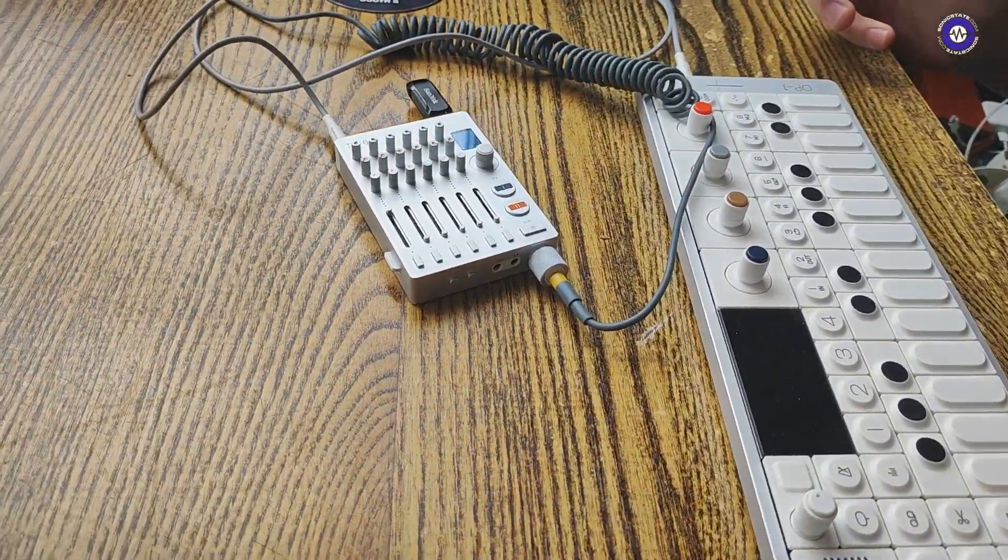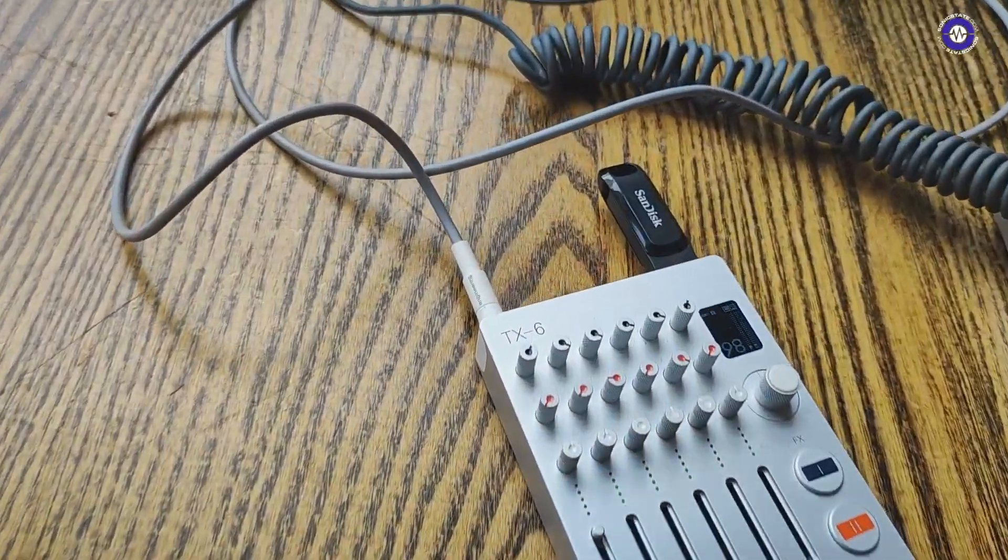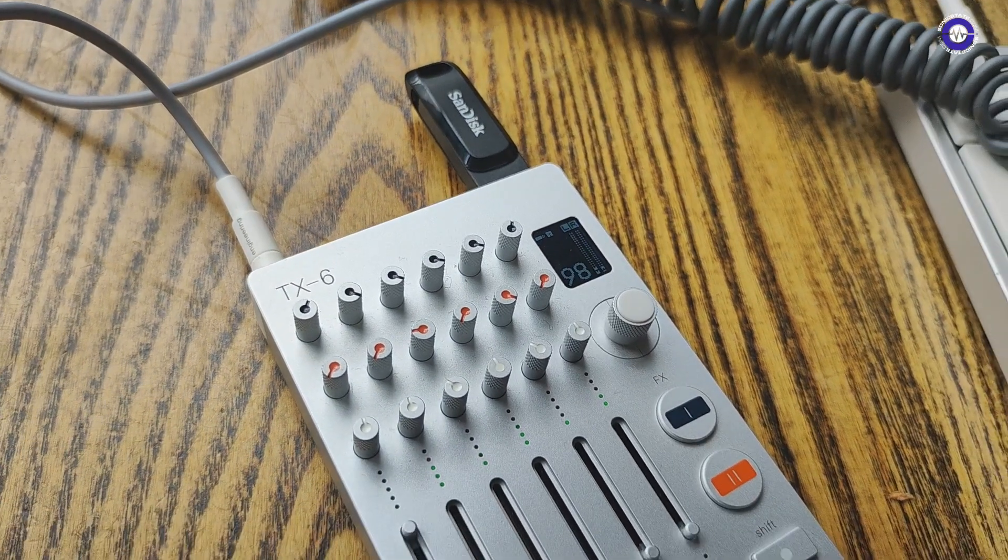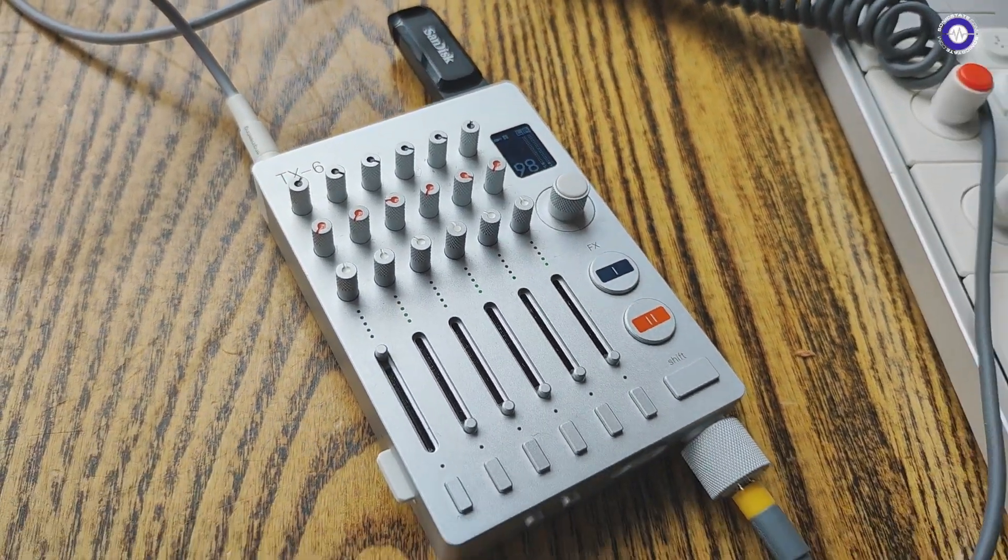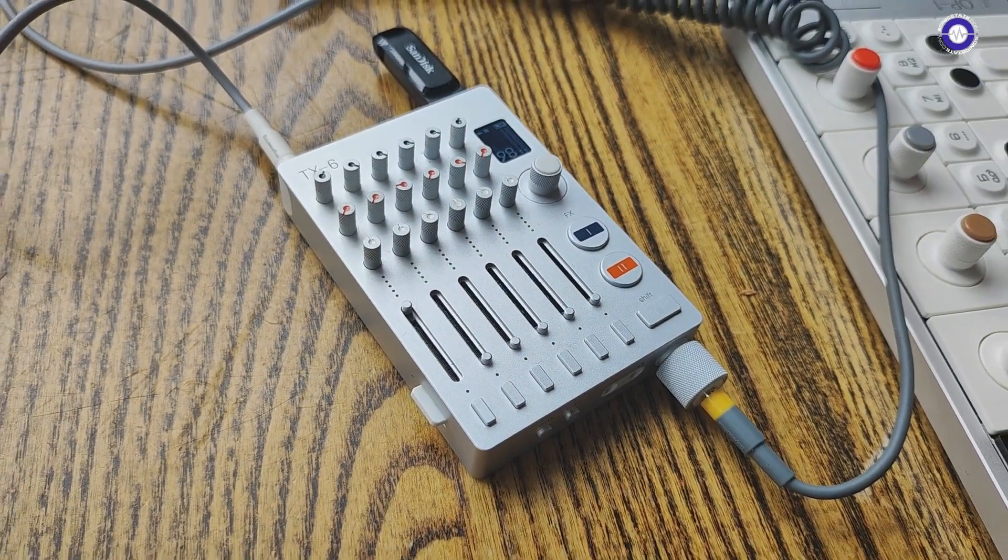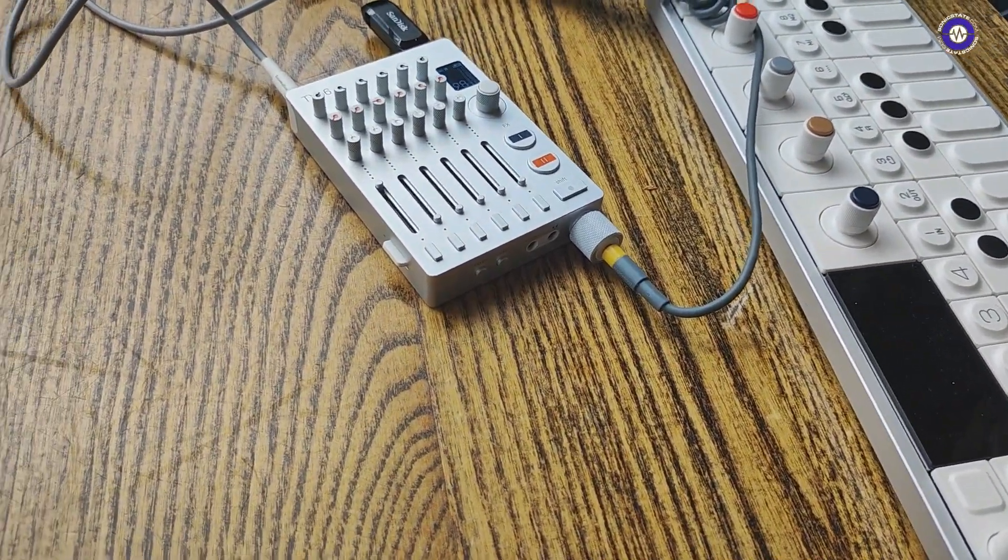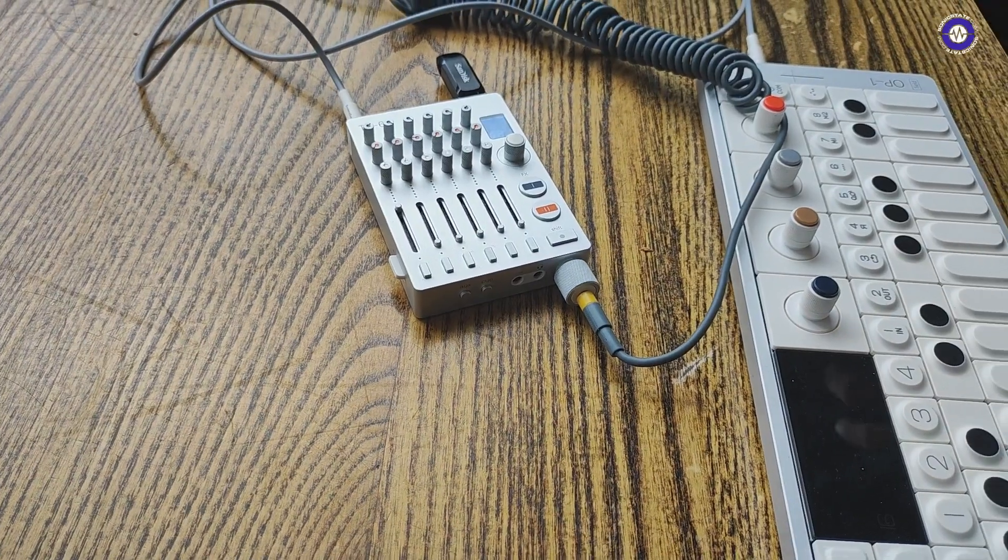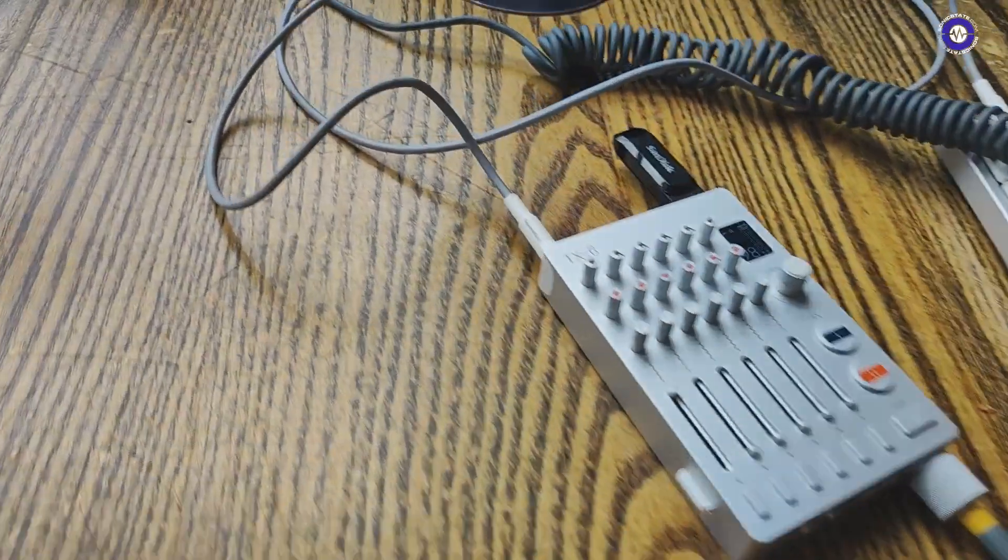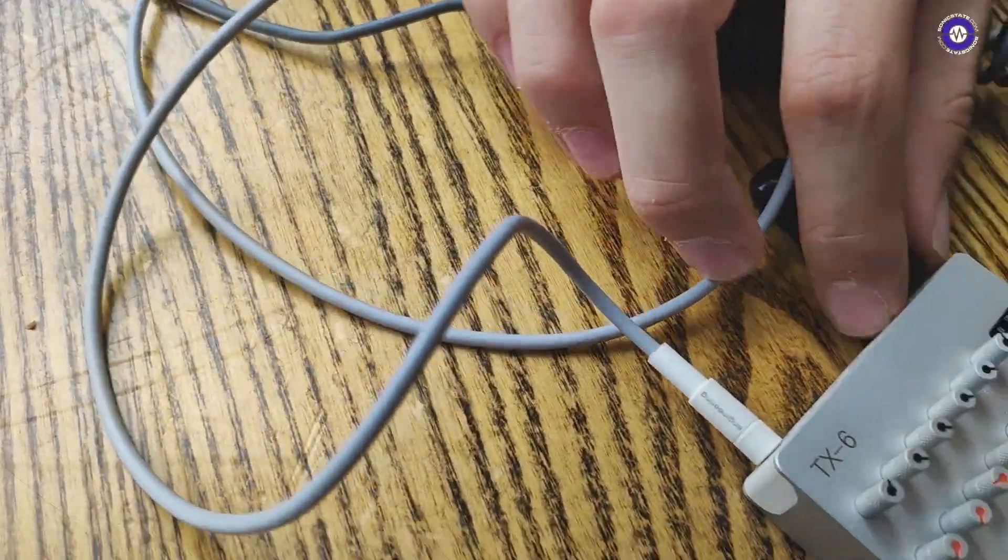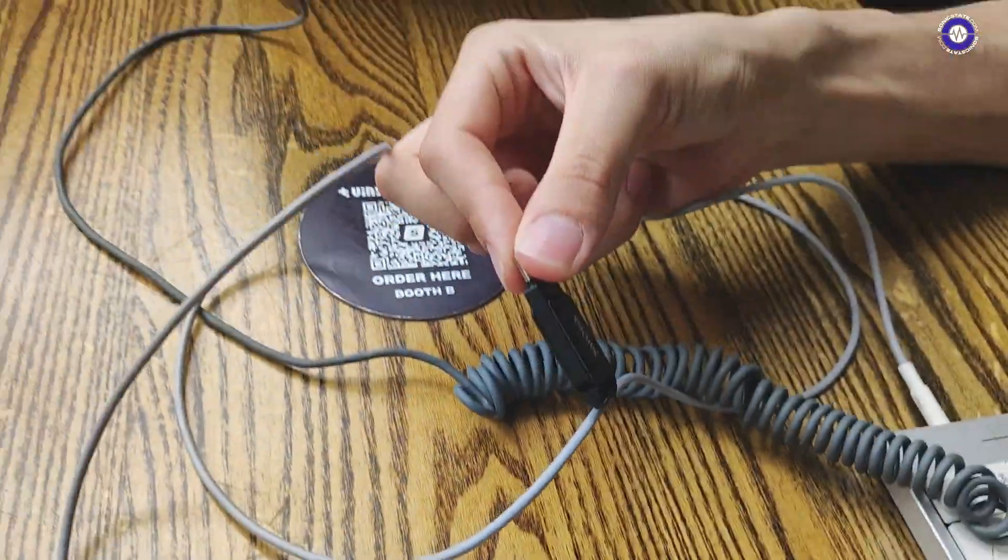So to start, obviously the biggest feature is recording straight to USB mass storage. So you can plug in a USB stick, a hard drive and just record two channel WAVs, 24-bit, straight to the USB stick. Sounds really good and it's really simple and you can store as much as your USB stick can hold. Right, so that's just like a USB, whatever that is. Yeah, it's just a pretty plain old USB stick.